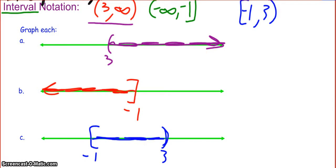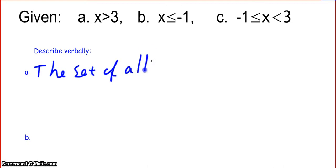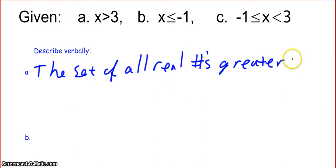That is our interval notation from inequalities, and then graphing. The last thing we're going to talk about is verbally describing these — that means use your words, or put it into words. So how do I verbally describe x is greater than 3? When we verbally describe this, we don't want to use the variable. We want to describe what this is actually representing. So x is greater than 3 is saying: the set of all real numbers greater than, or larger than, 3.